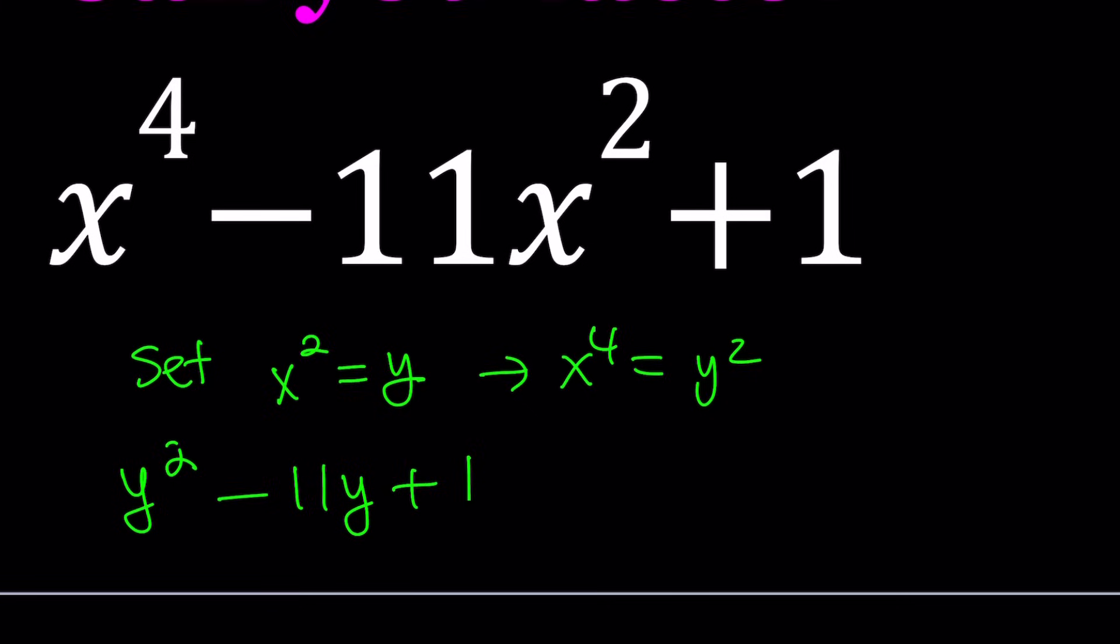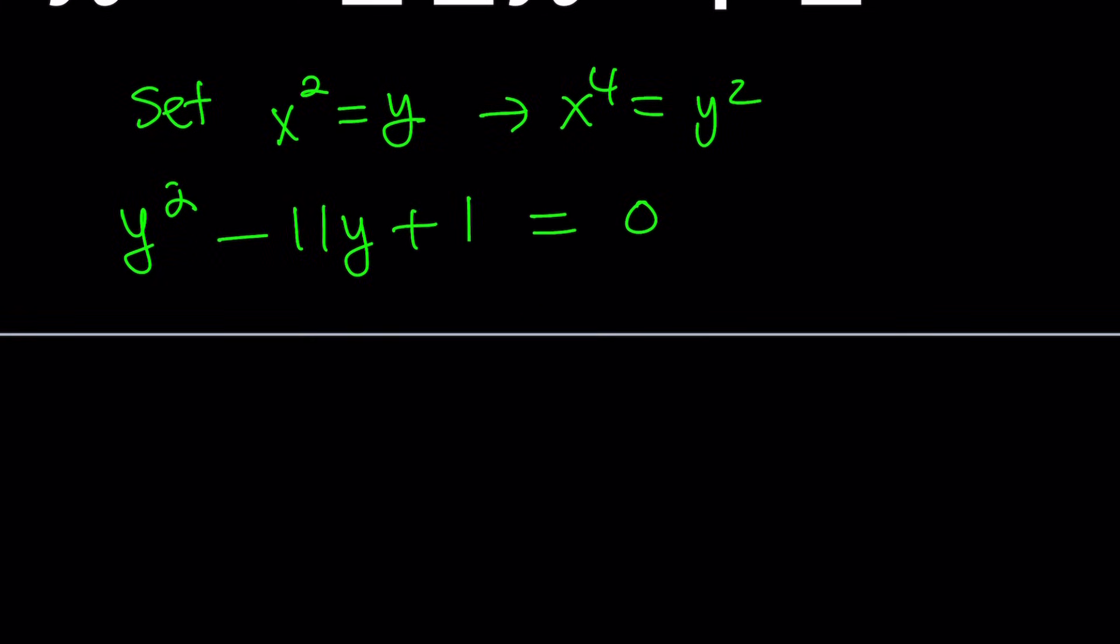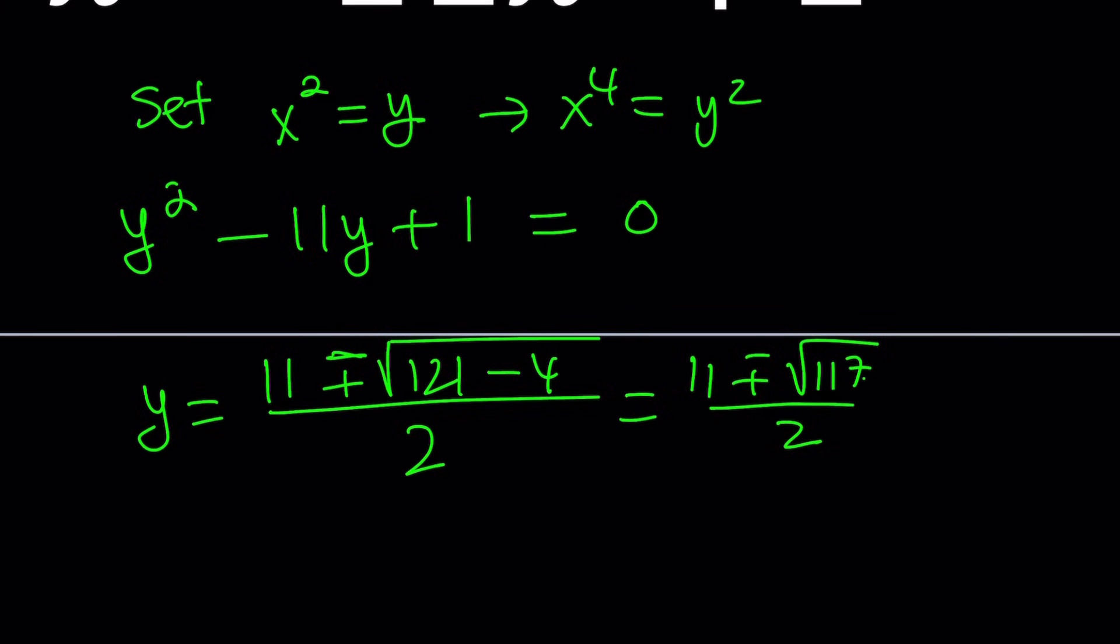So let's go ahead and set this equation equal to 0 and then solve it using the quadratic formula, which is pretty straightforward. So negative b plus minus the square root of b squared, which is 121, minus 4ac, which is minus 4, divided by 2. So this is going to give us 11 plus minus the square root of 117, divided by 2. 117 is divisible by 9, because 1 plus 1 plus 7 is 9. And it is actually 9 times 13. Great.